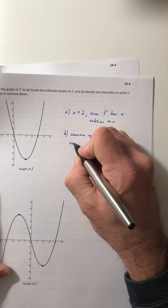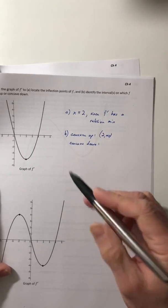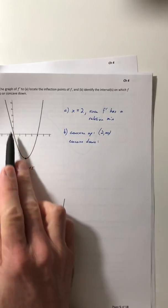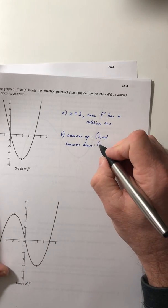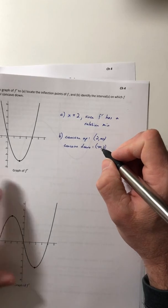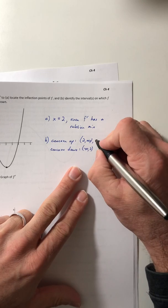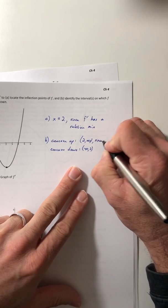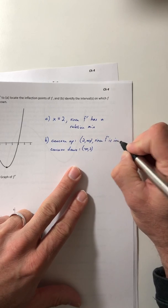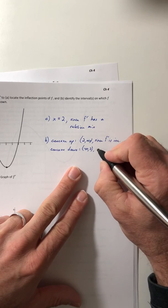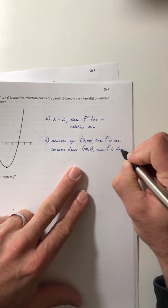Concave down is where the derivative decreases, so from negative infinity all the way up to 2. Your justification: for concave up, since F prime is increasing; and concave down, since F prime is decreasing.